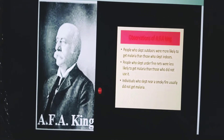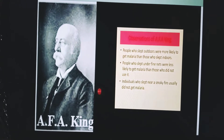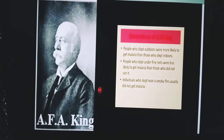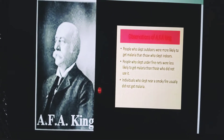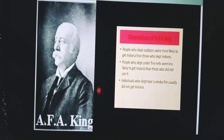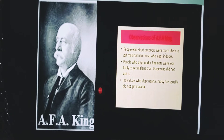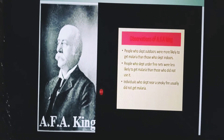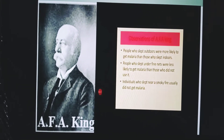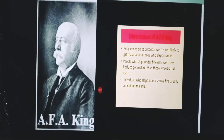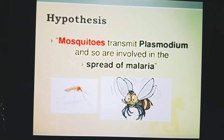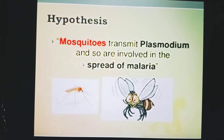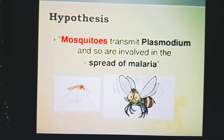In 1883, a physician AFA King listed 20 observations. Some important observations of King were: people who slept outdoors were more likely to get malaria than those who slept indoors; people who slept under fine nets were less likely to get malaria than those who did not use such nets; and individuals who slept near a smoky fire usually did not get malaria. On the basis of these observations, King suggested a hypothesis that mosquitoes transmit plasmodium and so are involved in the spread of malaria.